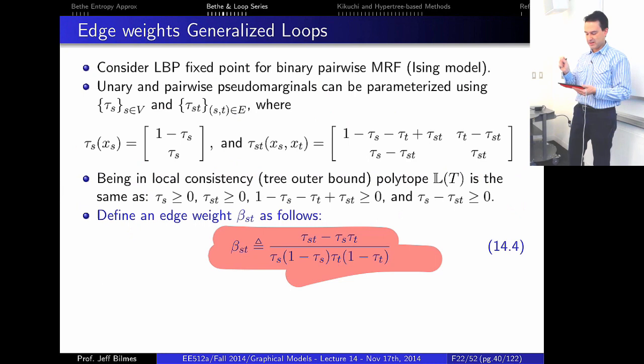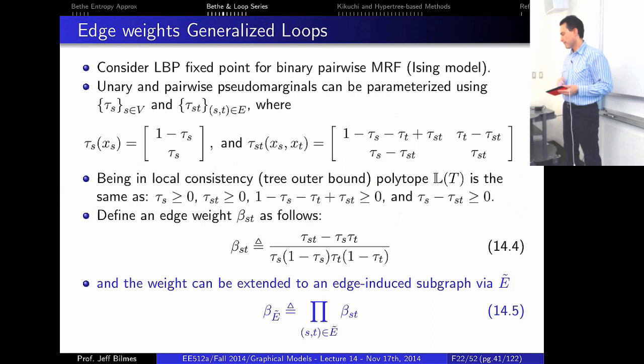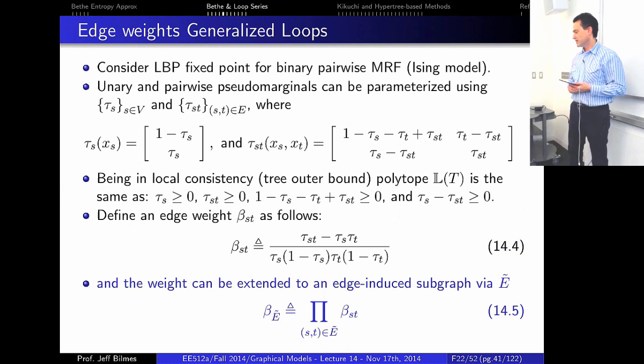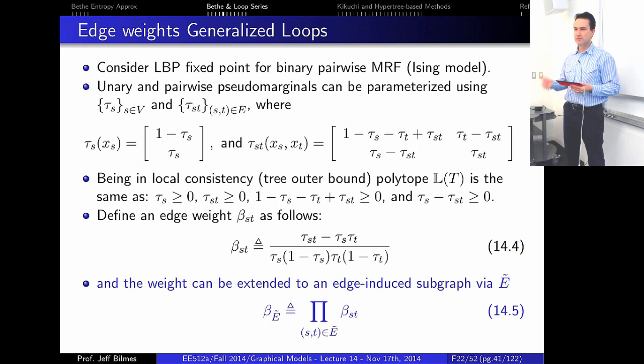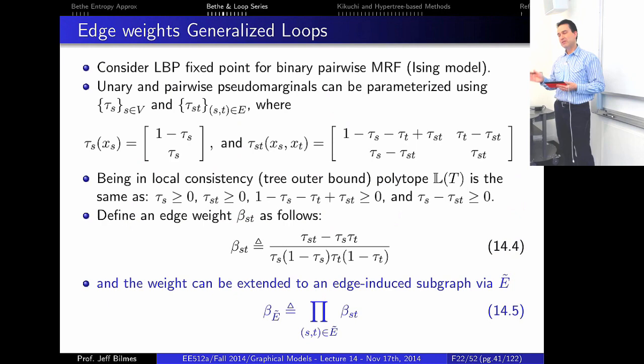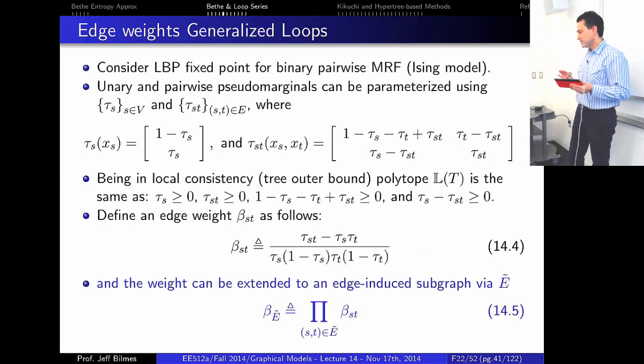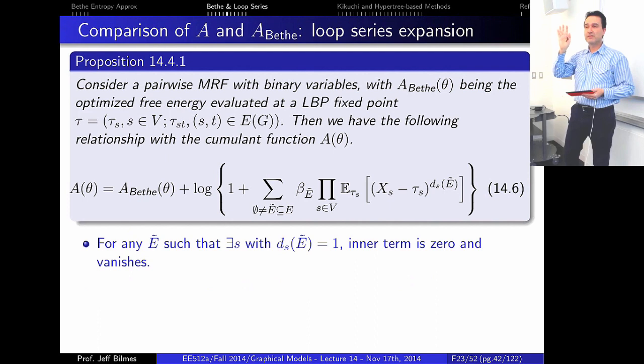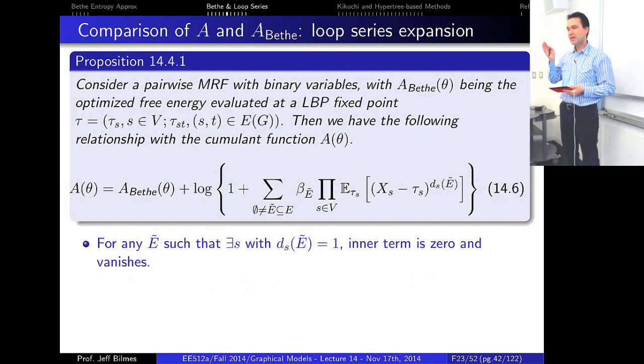We define an edge weight beta_st as (tau_st minus tau_s * tau_t) divided by a denominator. This is an edge weight for every edge st. We also define a weight for an entire edge-induced subgraph E-tilde by multiplicatively combining the edge weights of all edges in that subgraph.